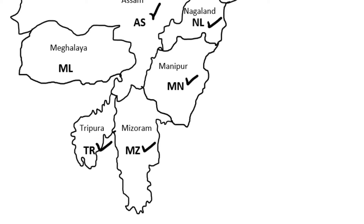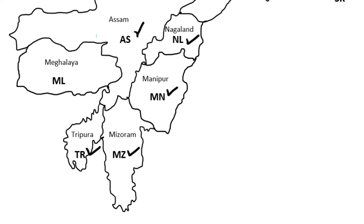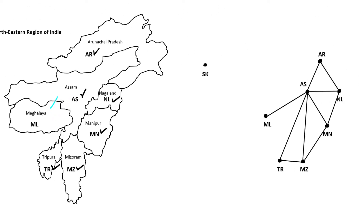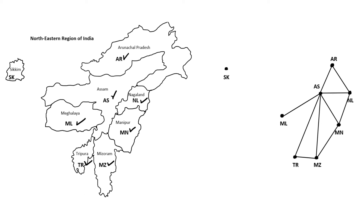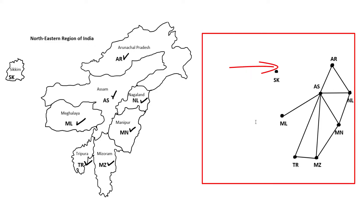Let's move on to ML. ML also only shares common boundaries with states we've already looked at — just AS. We're done with ML. We move on to SK. SK is completely isolated from the other northeastern region states. We're done with our graph, although I'd probably scoot that SK in.